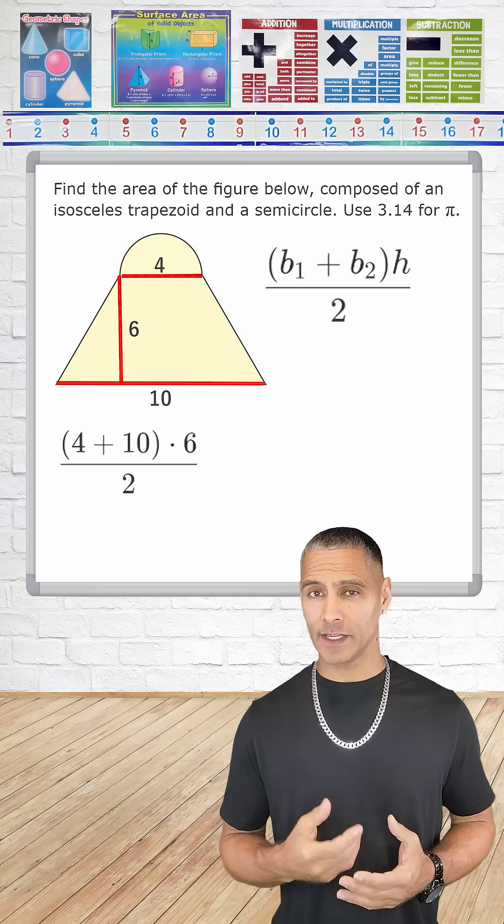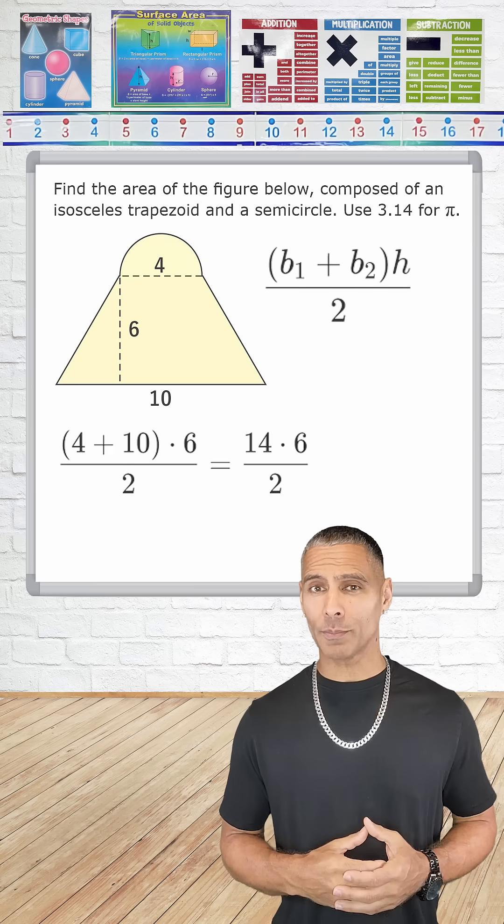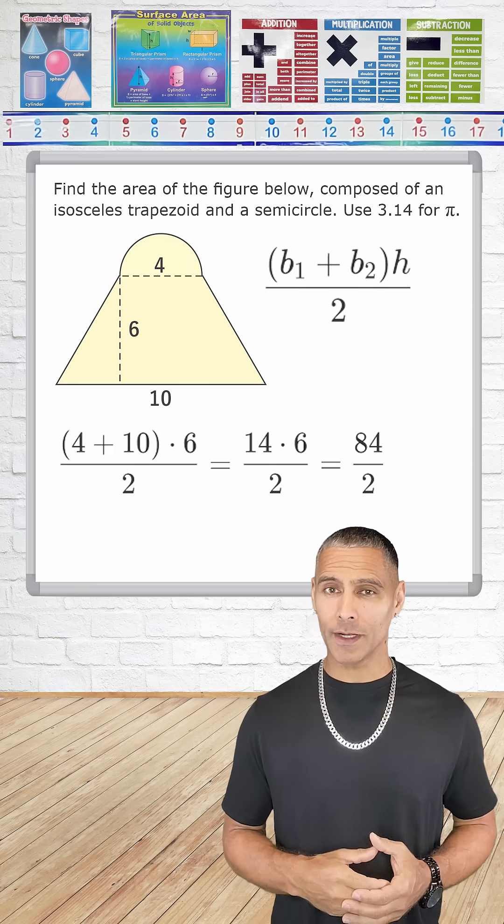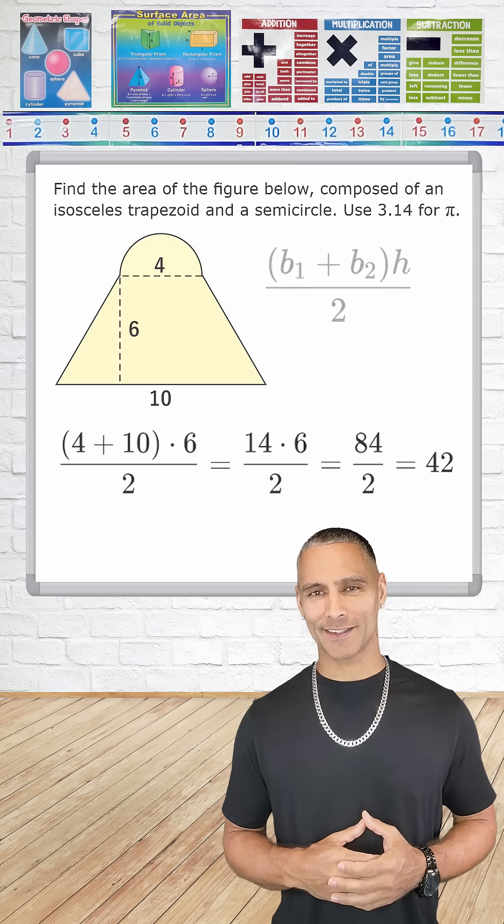After substituting our values into the equation, we add 4 and 10, which is 14, and then we multiply that sum by 6 to get 84 and divide by 2. That gives an area of 42 square units.